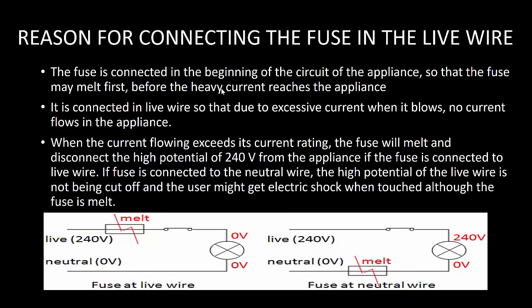The reason for connecting the fuse in the live wire: The fuse is connected at the beginning of the circuit so that it will melt before the heavy current reaches the appliance. If the fuse is connected in the neutral wire, the high potential of the live wire is not cut off, and the user might still get an electric shock when touched — even though the fuse has melted. So we always connect the fuse in the live wire.